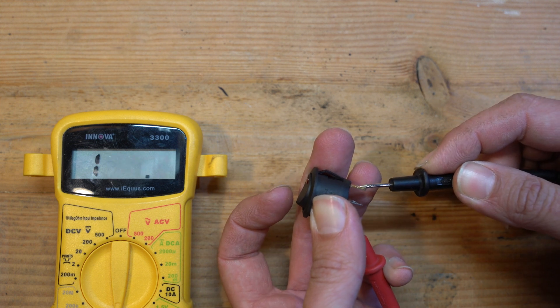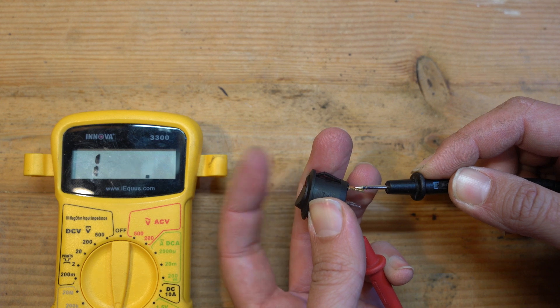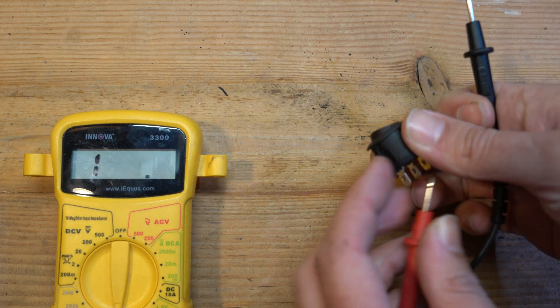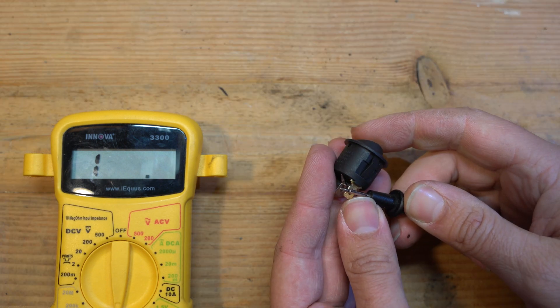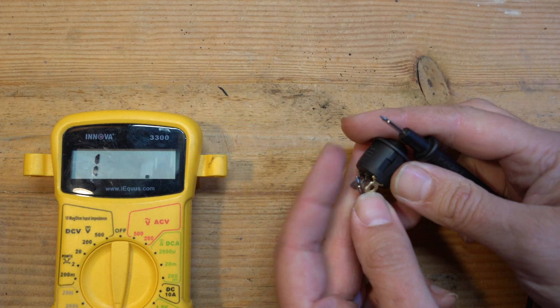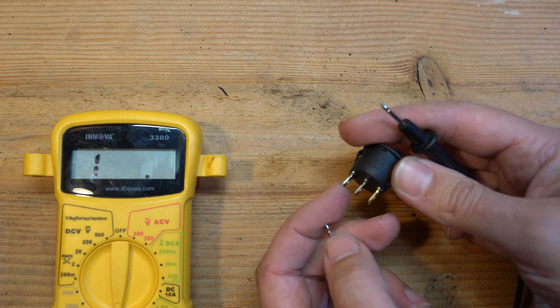But what I realized is, if I move this over to the ground lug, it doesn't have any effect whether the switch is on or off. Same if I move this to the middle, no effect. So that's how I realized this ground lug isn't connected to either of these. And that was the aha moment.